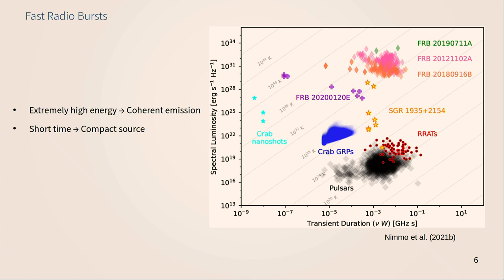Since we know FRBs are extragalactic, we can infer they must be very, very bright to be visible from Earth. For FRBs localized to host galaxies, we can actually measure the distance precisely and calculate the intrinsic luminosity. From a Nemo et al. paper, comparing three localized FRBs to several other transients, we see they're generally a lot brighter given their duration than similar astrophysical phenomena. This brightness implies there must be some kind of non-thermal emission mechanism that causes the light to be emitted in phase with itself, which gives some clue as to what could be causing these.